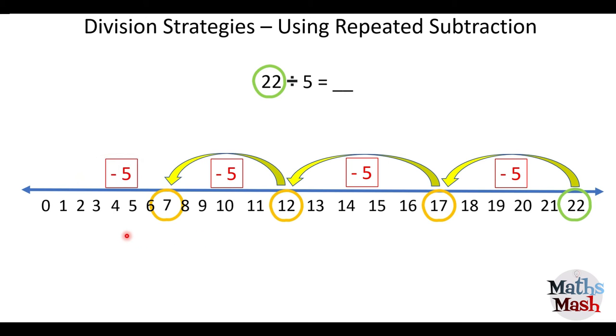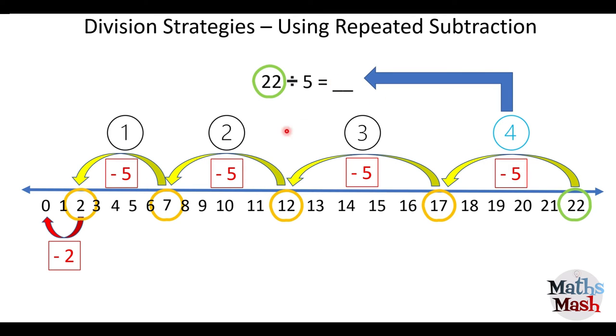I count back another five gives me, gets me to two. But we don't have enough left to make another group of five. So we can only subtract two in order to get to zero. So I've jumped back or subtracted four groups of five. But I've got a remainder of two here. So my answer is going to be four remainder two.